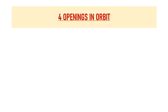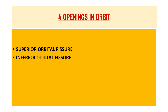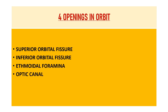So what are the four main openings in the orbit that we are going to talk about in this video? We shall be discussing about the superior orbital fissure and its contents, the inferior orbital fissure and its contents, the ethmoidal foramina, and the optic canal.